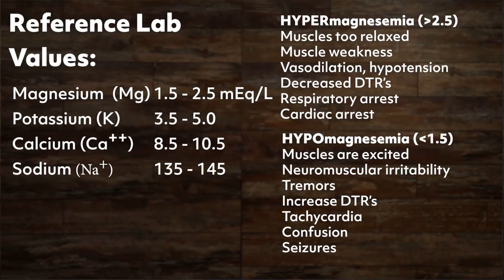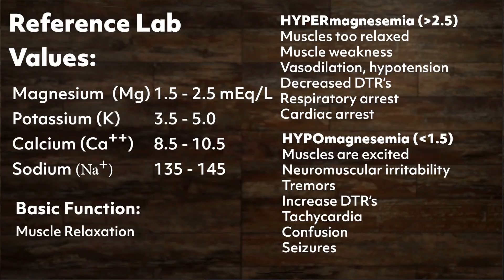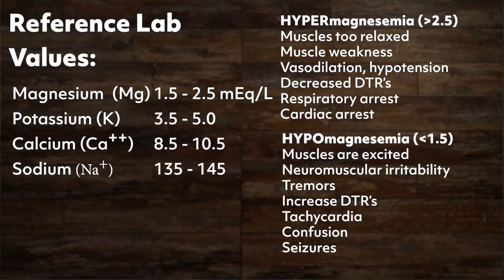Magnesium is a major intracellular cation, meaning that magnesium is mostly inside the cell, with just a small amount in the ECF. Its normal range is 1.5 to 2.5 milliequivalents per liter. The basic function of magnesium is muscle relaxation. So if you have a lot of magnesium — over 2.5, called hypermagnesemia — then the muscles are too relaxed, causing muscle weakness, vasodilation, hypotension, decreased DTRs, and respiratory arrest.